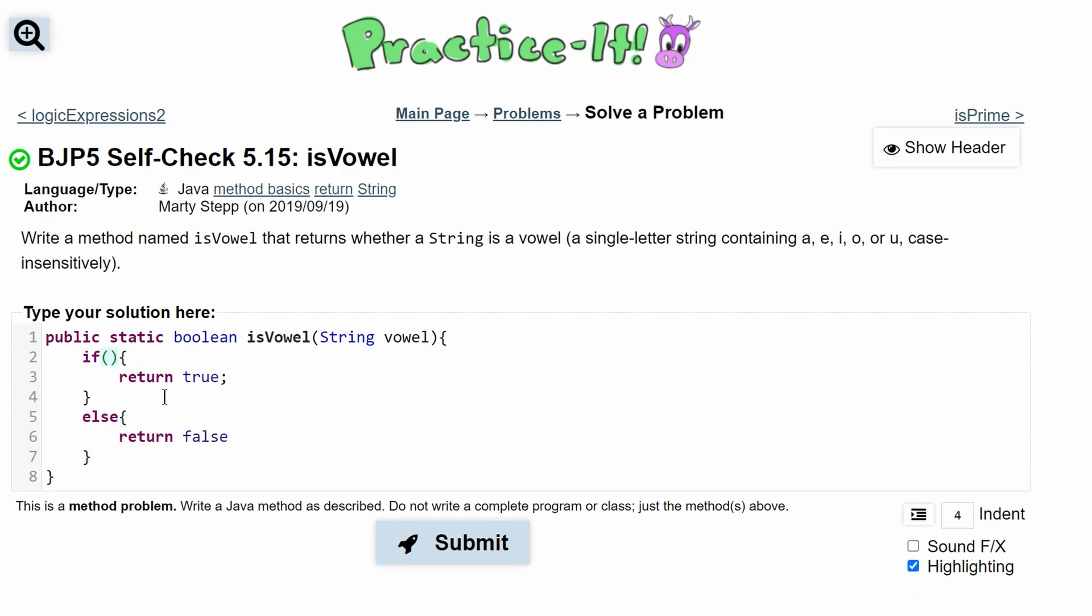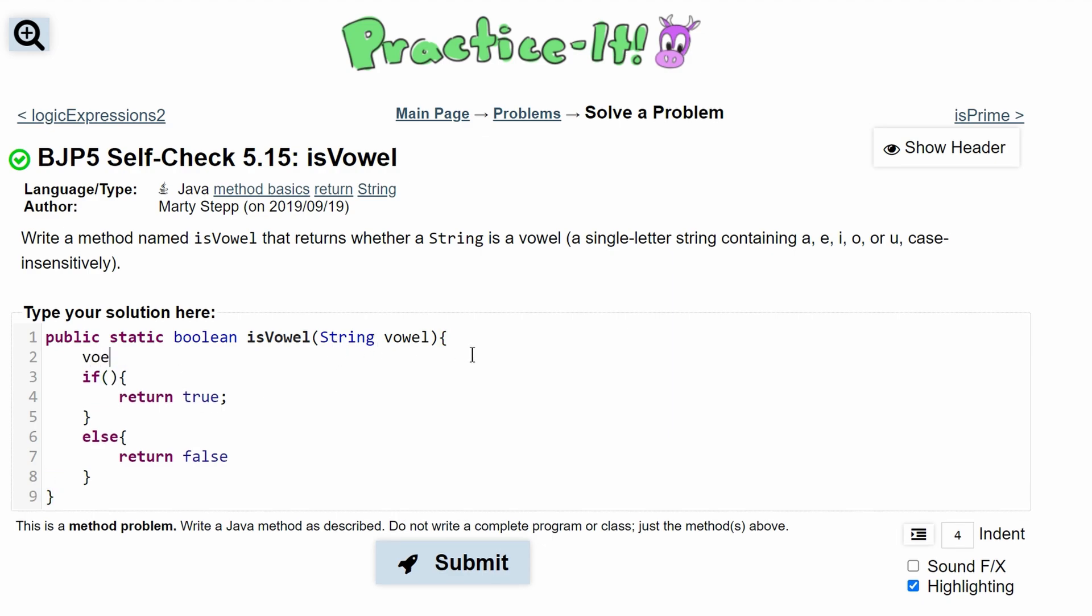So in our if statement, we need the condition for execution. To do this, we will set vowel equal to vowel.toLowerCase. And when we do this, we are setting our vowel to vowel, but the lowercase version, in case we are passed an uppercase.